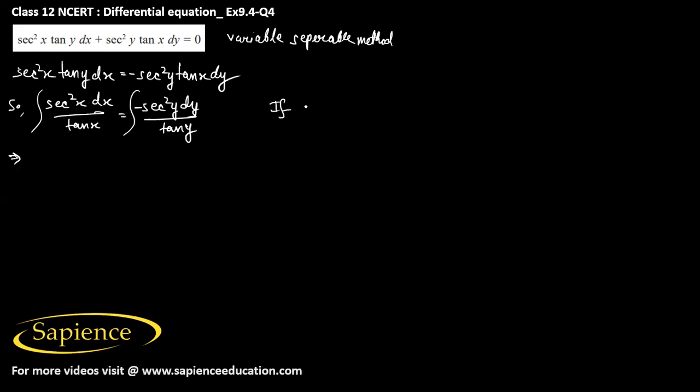So now if we take, suppose tan x equals to u, then sec square x dx that is equals to du. And similarly, tan y if I take it as v, then sec square y into dy that will be equal to dv.